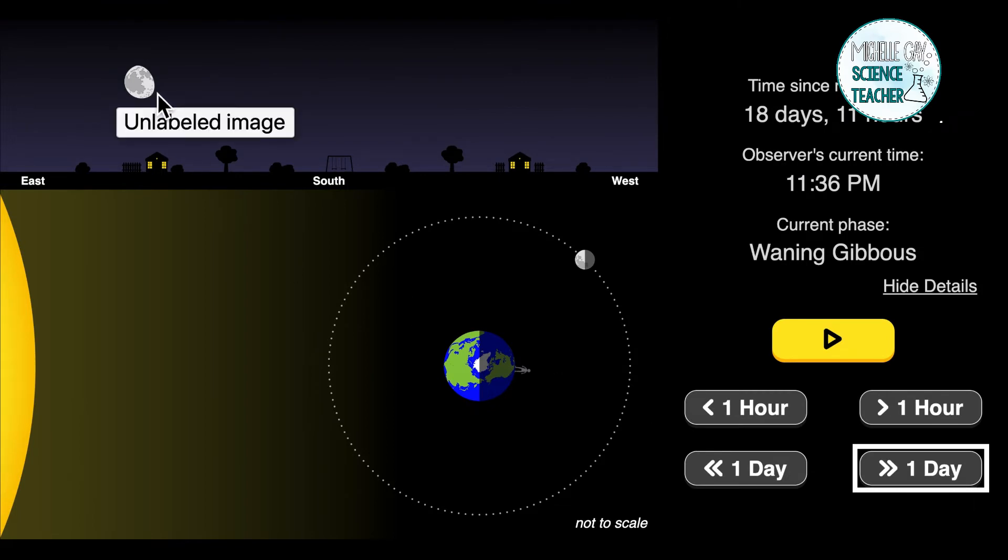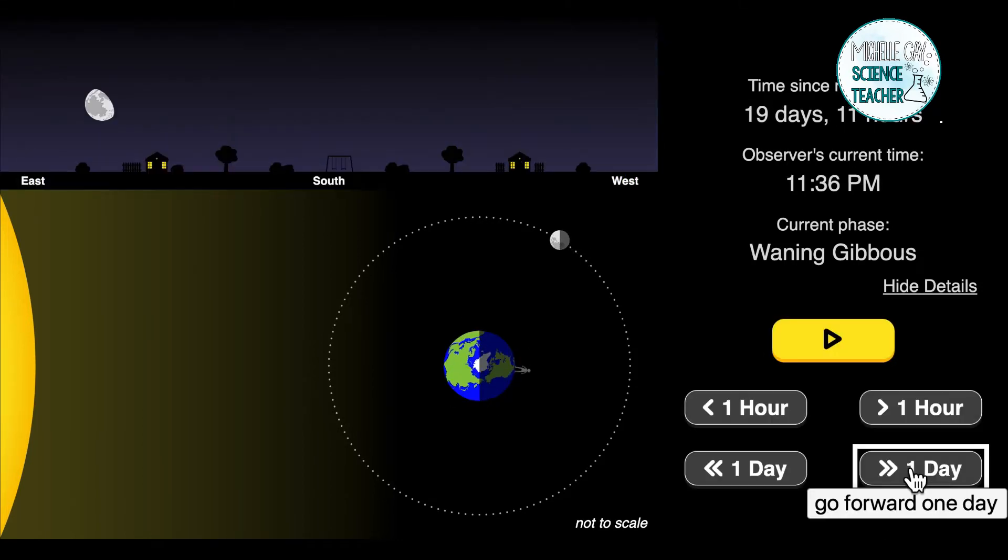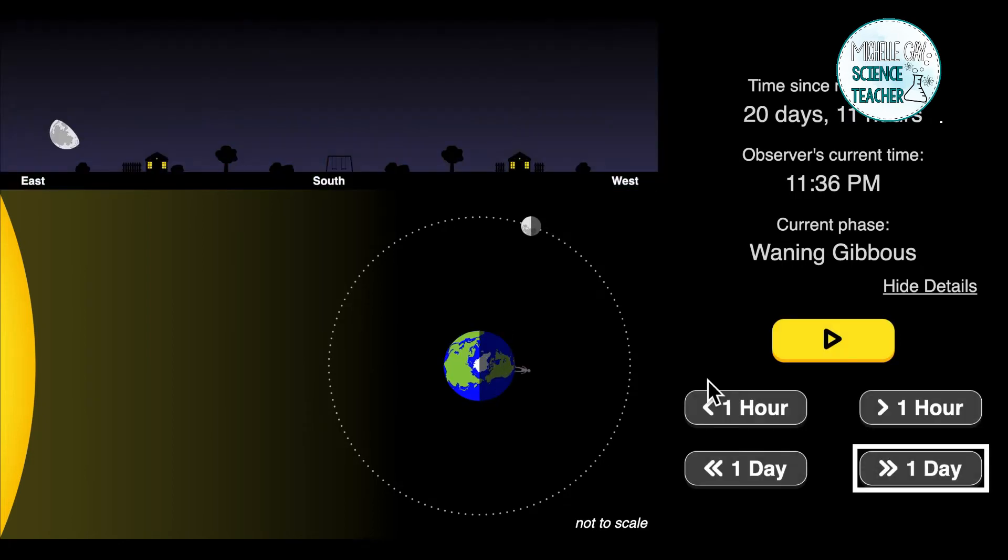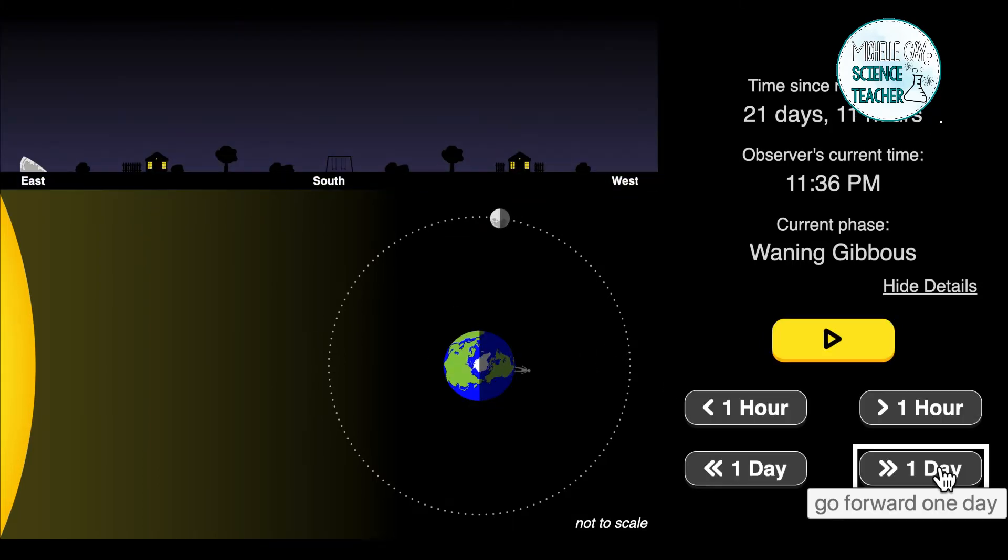It's continuing to get dark and this part we called the waning gibbous. As it continued to wane, the waning gibbous phase is between half moon and full moon. It means it's getting smaller. What part is getting smaller? Look at it carefully and think about it.